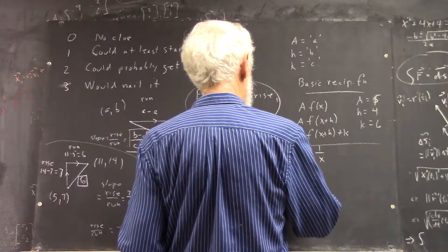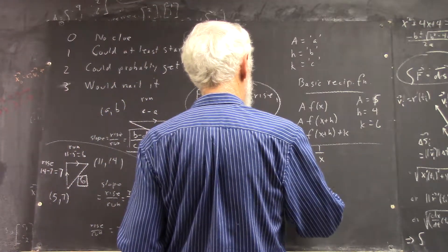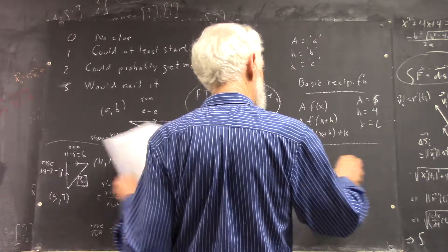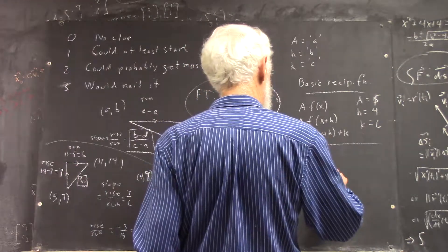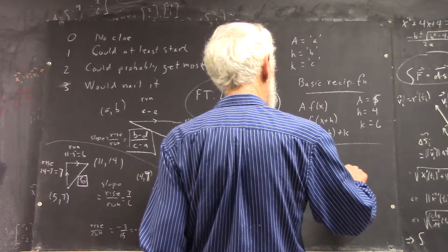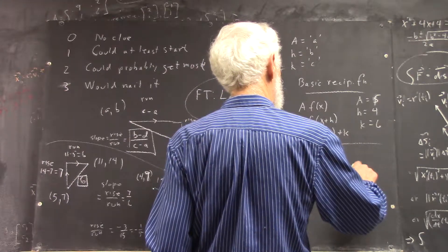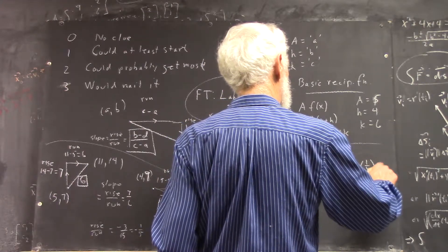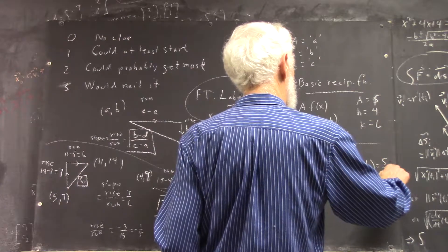So a f of x is what? Well, it's 5 f of x, which is 5 times 1 over x, which could be written 5 over x.